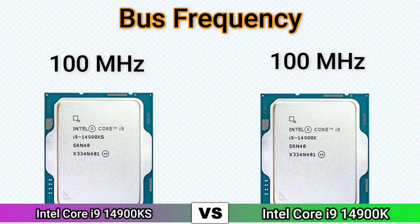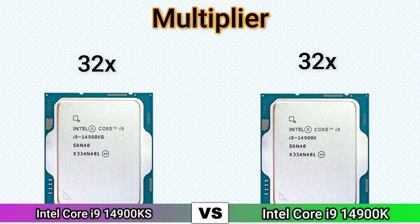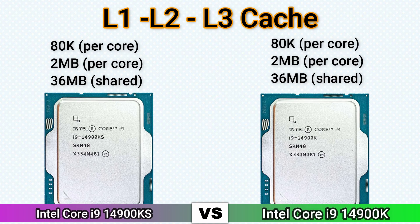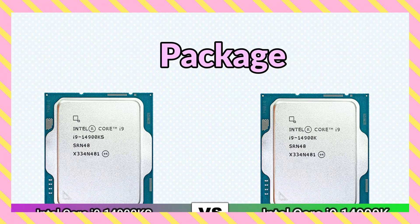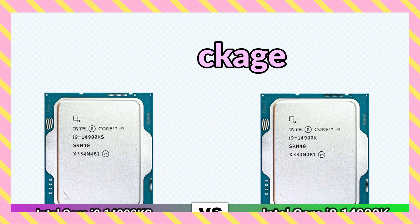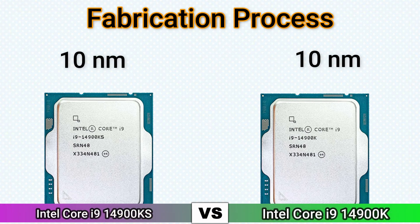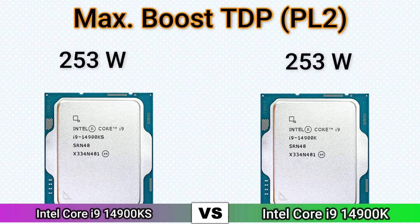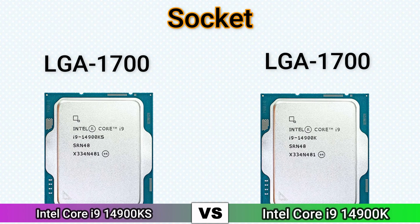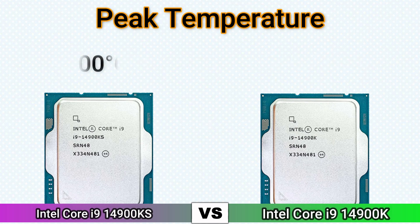Base TDP, multiplier. L1, L2, L3 cache. Unlocked multiplier. Fabrication process. Thermal design power PL1, max boost thermal design power PL2, socket.